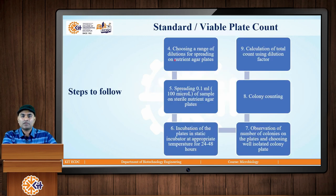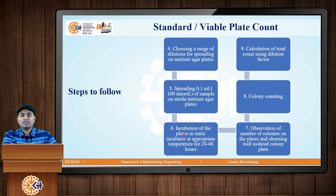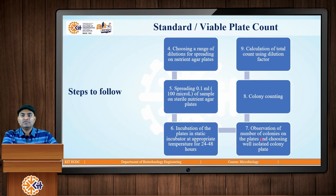After the serial dilution is performed, the fourth step is choosing a range of dilutions for spreading the nutrient agar plates. Sterile nutrient agar plates are available and dilutions from 10 raise to minus 1 to 10 raise to minus 5 would be chosen for spreading. In the spread plating, 0.1 ml of sample from the respective saline tube suspension is taken and spread on the agar plate. After all the plates are spread, they are kept in static incubators at 37 degrees Celsius for bacteria, and incubated for 24 to 48 hours, that is 1 to 2 days.